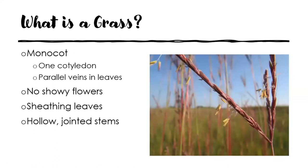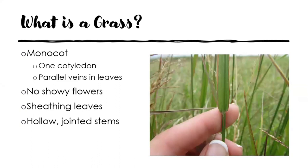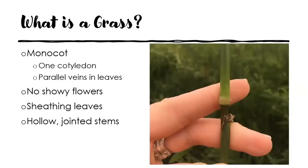Monocots also have parallel veins in their leaves. As a kid we've picked up blades of grass and noticed that the veins are running parallel. Probably the most challenging thing about grasses is they don't have showy flowers — what makes them so difficult to identify is that we want to find that big showy flower, look it up in our color field guide, and easily identify it. Here in the photo we have big bluestem that is in flower. Grasses also have sheathing leaves, meaning the leaf wraps around the stem to form a structure called a sheath. Grasses also have hollow jointed stems, with a swollen node or joint, kind of like a kneecap, along the stem.